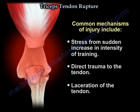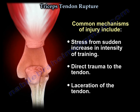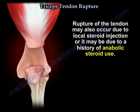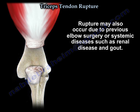The common mechanisms of injury include stress from a sudden increase in intensity of training, direct trauma to the tendon, or laceration of the tendon. Rupture may also occur due to local steroid injection or a history of anabolic steroid use, previous elbow surgery, or systemic diseases such as renal disease and gout.